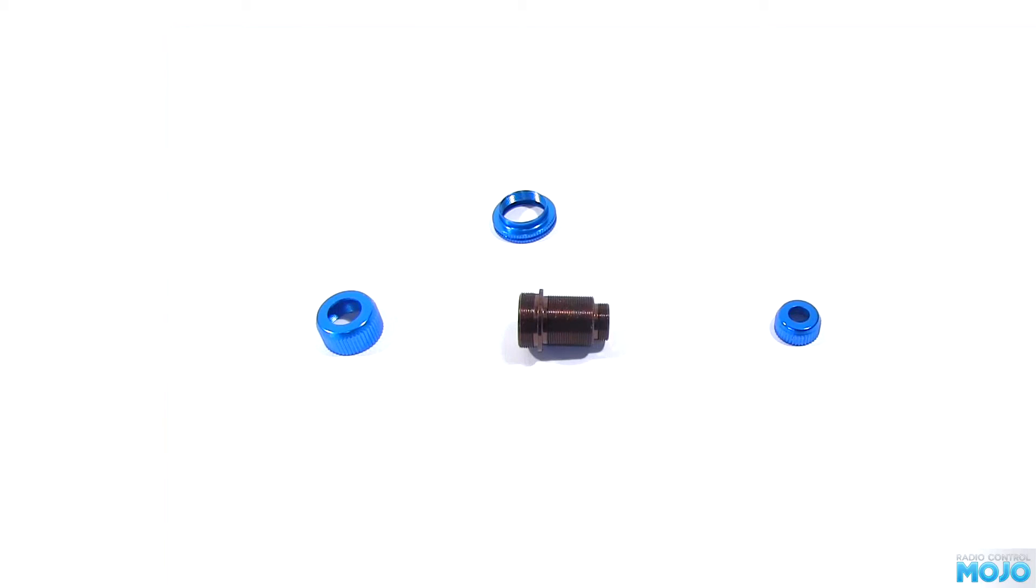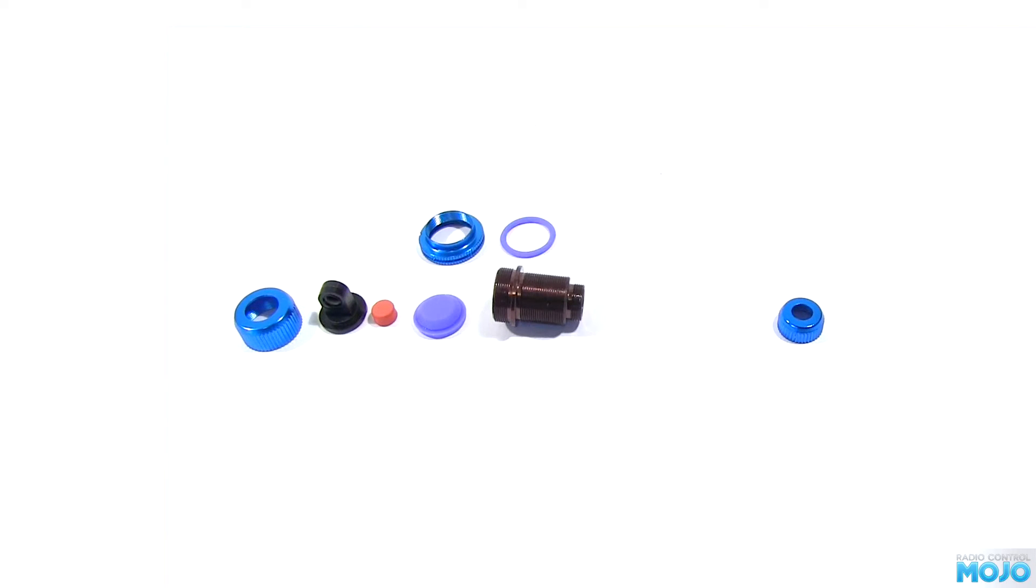For each damper you will also need, and these are the names from the instructions: shock head, urethane bushing, oil seal, selected anti-slip o-ring, selected anti-leak o-ring, spacer, rod guide, 2 E-rings.